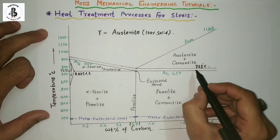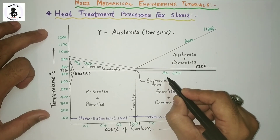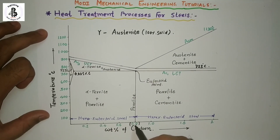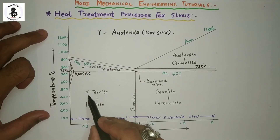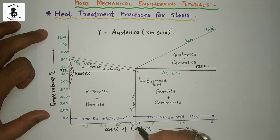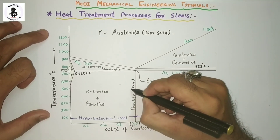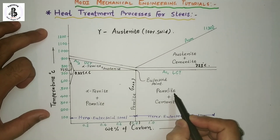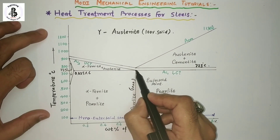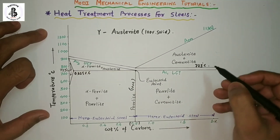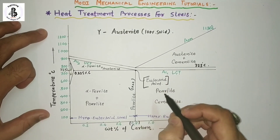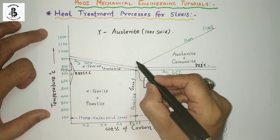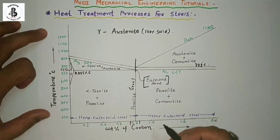Another temperature line at around 723°C is the AC1 temperature line, or lower critical temperature line. Before 0.8% carbon, there is formation of alpha ferrite plus pearlite. At 0.8% carbon, it will be a 100% pearlitic structure, and after that, up to 2% carbon, it will be pearlite plus cementite. The point at 0.8% carbon and 723°C is known as the eutectoid point, where the transformation passes through this line — that is the eutectoid steel formation.